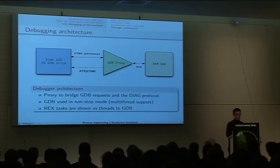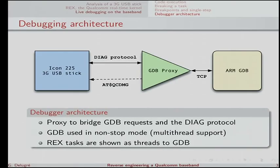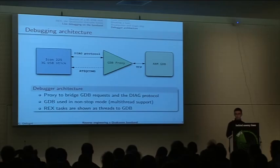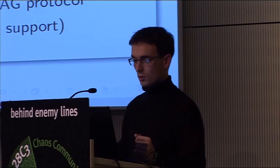The debugger architecture: you have the stick, you have GDB — I try to be GDB-compliant. You are communicating over the diagnostic protocol, so you need some kind of proxy to put the GDB requests into your protocol. You can also show each task of the operating system as a thread in GDB. This way you can reuse the multi-threading features of GDB to debug the baseband. I'll do a demo of the debugger.